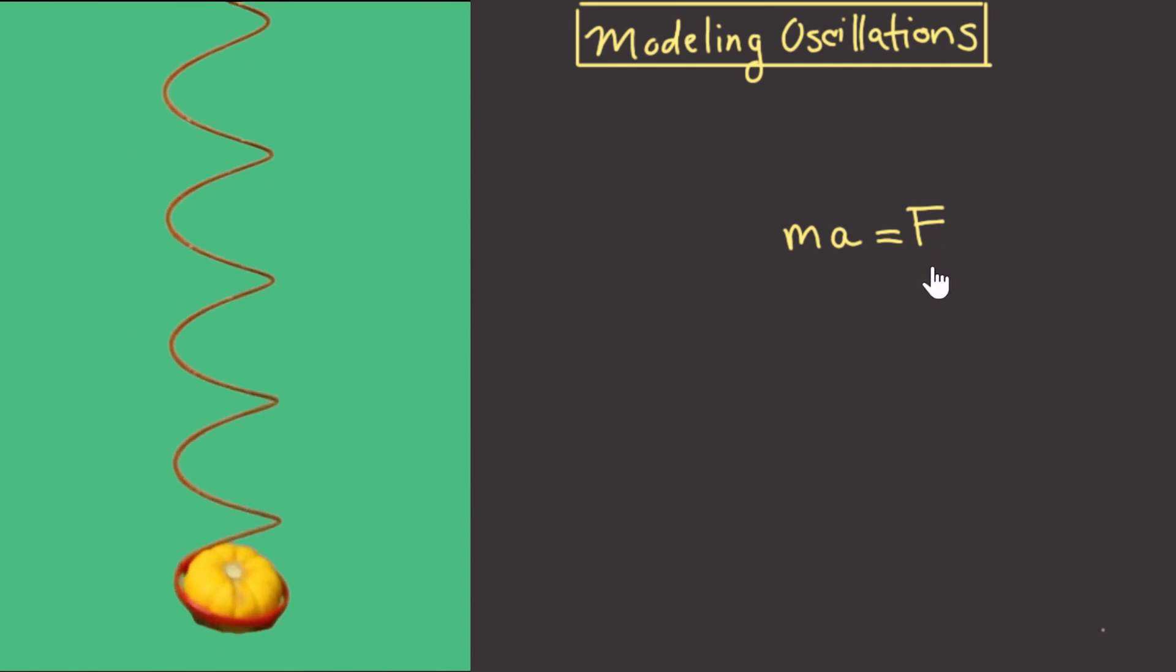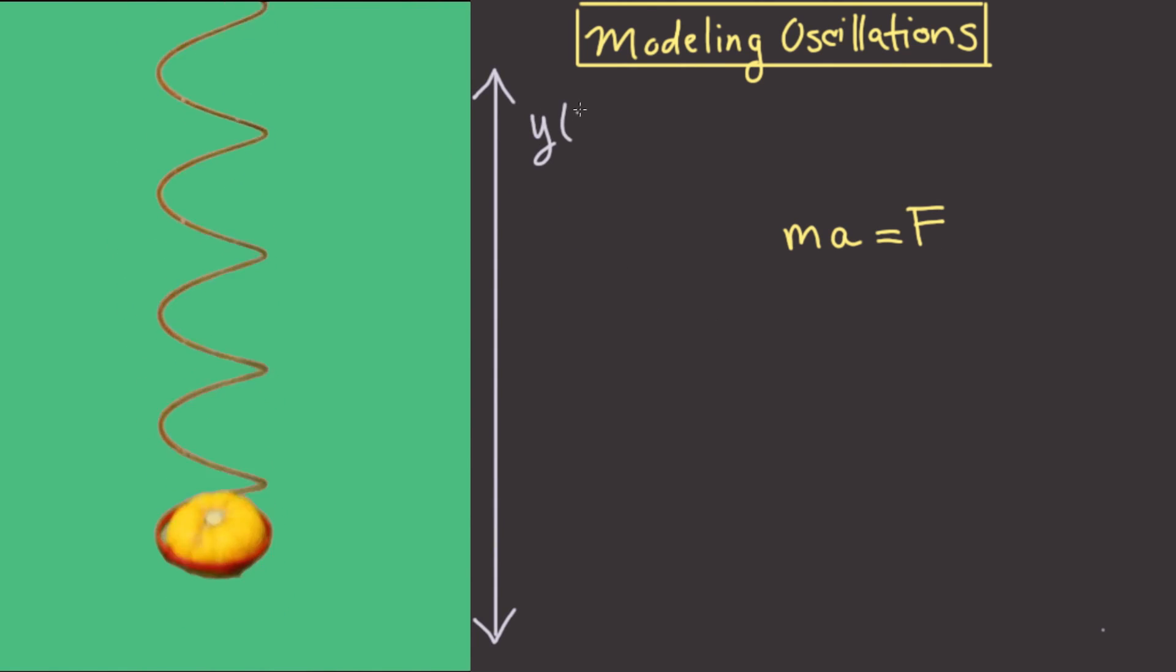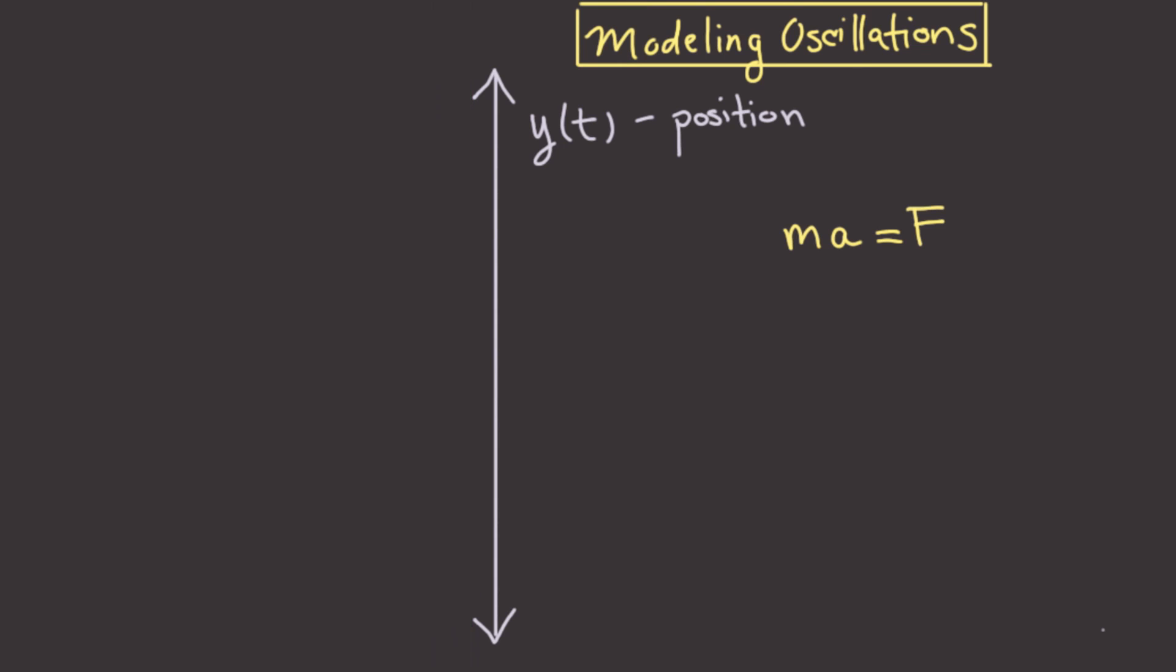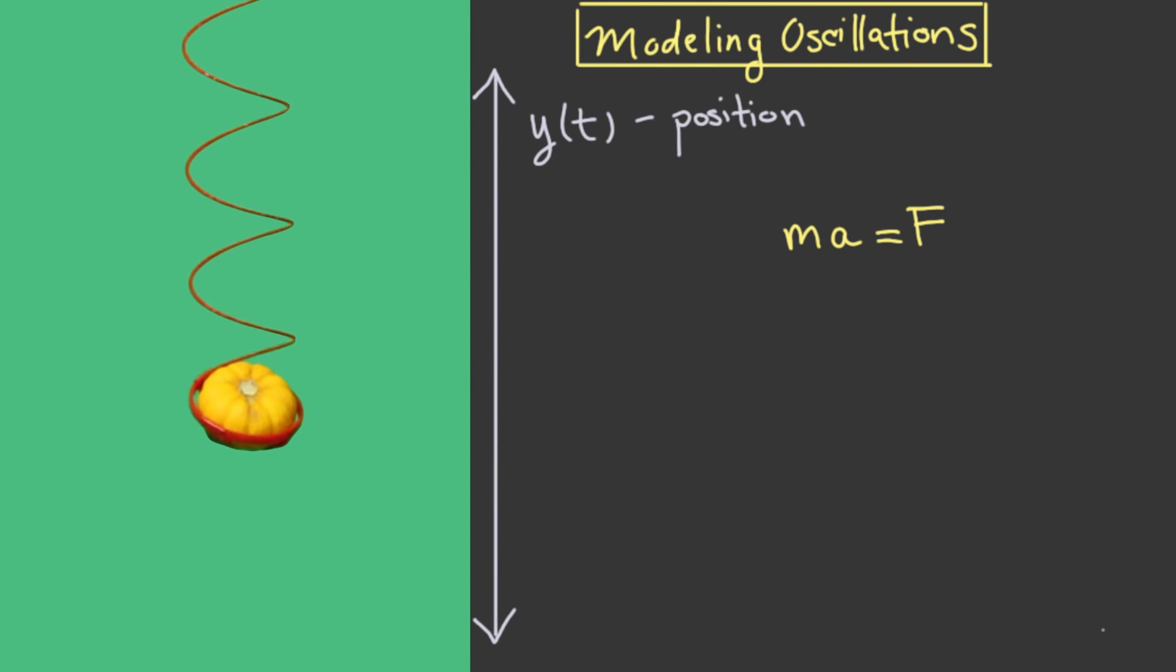The next step is that I'm going to choose a frame of reference for this problem. So I'm going to let y be the position along this vertical axis, and I want to choose where the zero lies on this axis. To do this I'll use a quick experiment. There is a position where if I let the pumpkin go with zero velocity, it doesn't really move at all. This means that the sum of the forces must be zero. I'm going to go ahead and let this horizontal position be the zero on my y-axis.